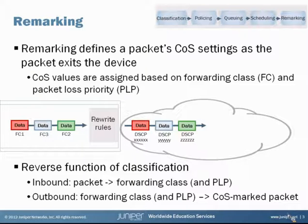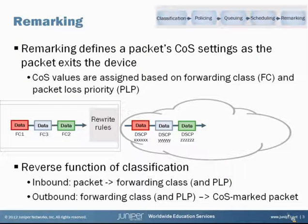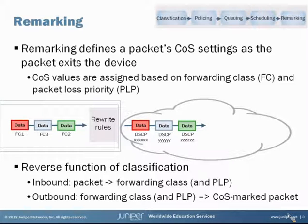Remarking preserves the priority of packets as they move out and downstream into the network. With marking, we simply attach CoS settings or assign CoS values to packets as they exit our device. These CoS values are assigned based on all of the work we've done inside the device - our forwarding class settings and maybe our packet loss priority settings - and those values can be used at the next device to again reassign forwarding classes and packet loss priority values.